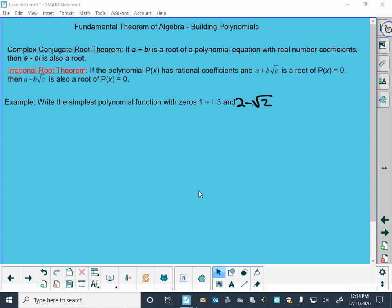This is normally a place where I would have talked about the complex conjugate root theorem, but we don't have time to do that this year. We have mentioned the irrational root theorem before that said if a plus b times the square root of c is one root, then a minus b times the square root of c is also a root.